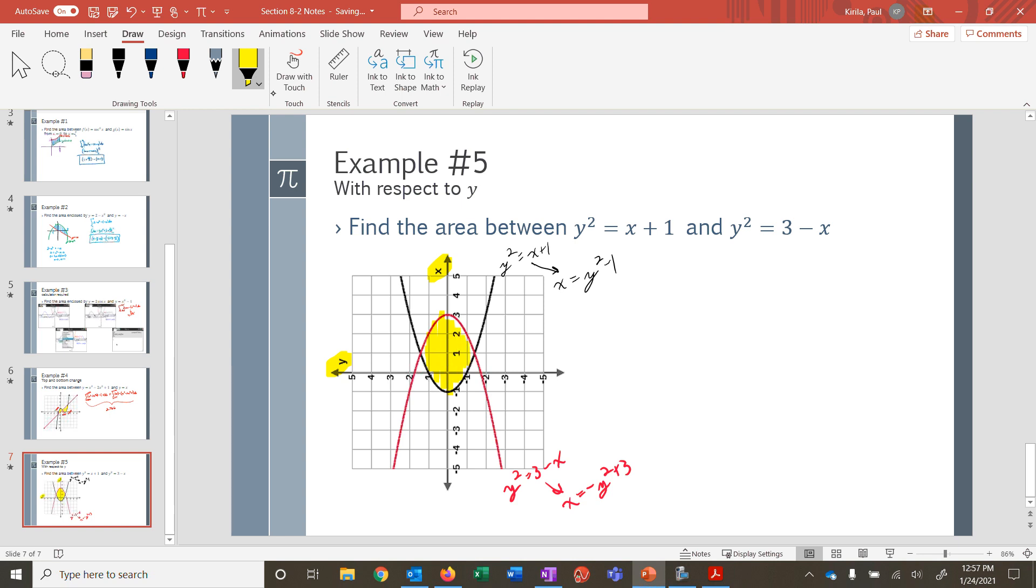Now I can see I've got the same thing on top. The red is always on top. The black is always on the bottom. So I have an integral. But now it's in terms of y's. So red is on top. So that's the negative y squared plus 3 minus the black is on the bottom, y squared minus 1, with respect to y.